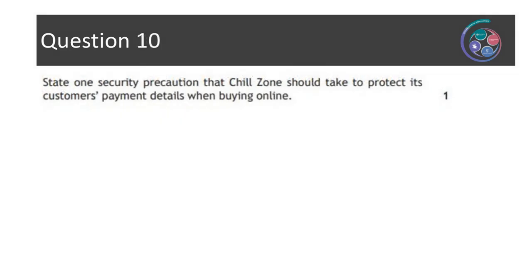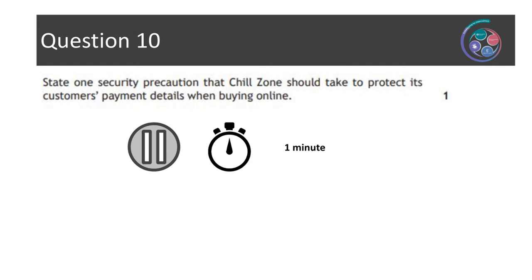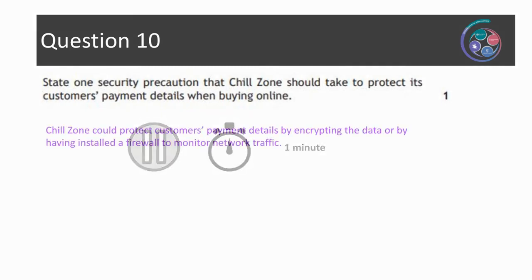Question ten asks: state one security precaution that Chill Zone should take to protect its customers' payment details when buying online. It's a one mark question. There are a couple of security precautions Chill Zone could use. One is to encrypt their data — at National 5, just saying that encrypting data to keep it secure is sufficient to get the mark, as it's asking for a generic security precaution. Another security precaution is that Chill Zone could use a firewall to protect against unauthorised access to their computer network where they process customer payment details.